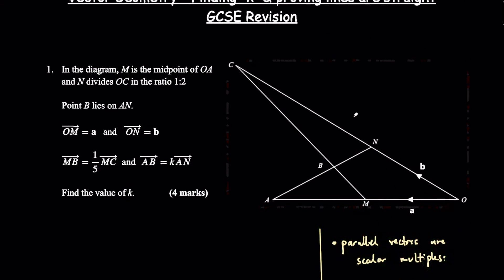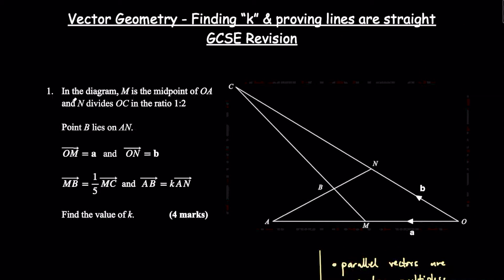Let's get stuck into the first question. It says: in the diagram, M is the midpoint of OA and N divides OC in the ratio 1 to 2. Point B lies on AN. OM equals the vector a and ON equals the vector b. MB equals a fifth MC and AB equals k·AN. Find the value of k. This is a four-mark question.